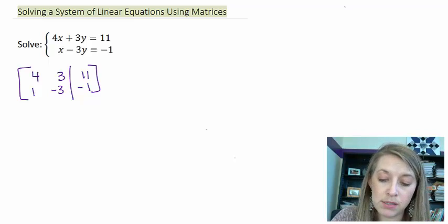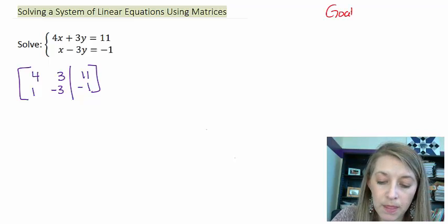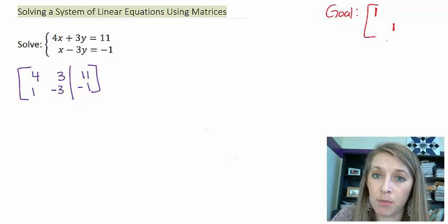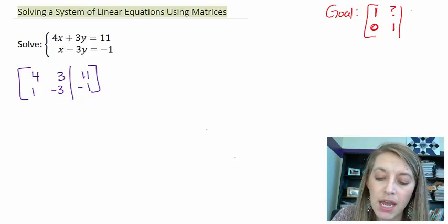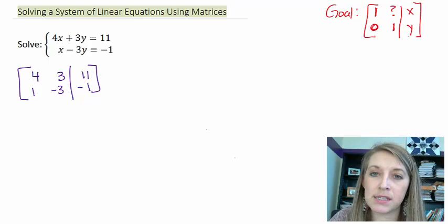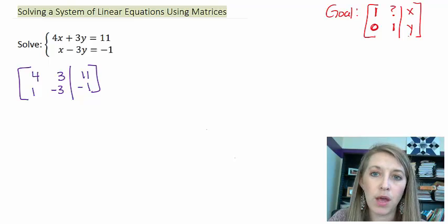Remember what our goal is. So our goal is to get a 1 on the top left on the bottom right, a 0 down here on the bottom left. It doesn't matter whatever we get here because we're going to use that for our back substitution. And then whatever answers we get here are going to be the x and the y answers.